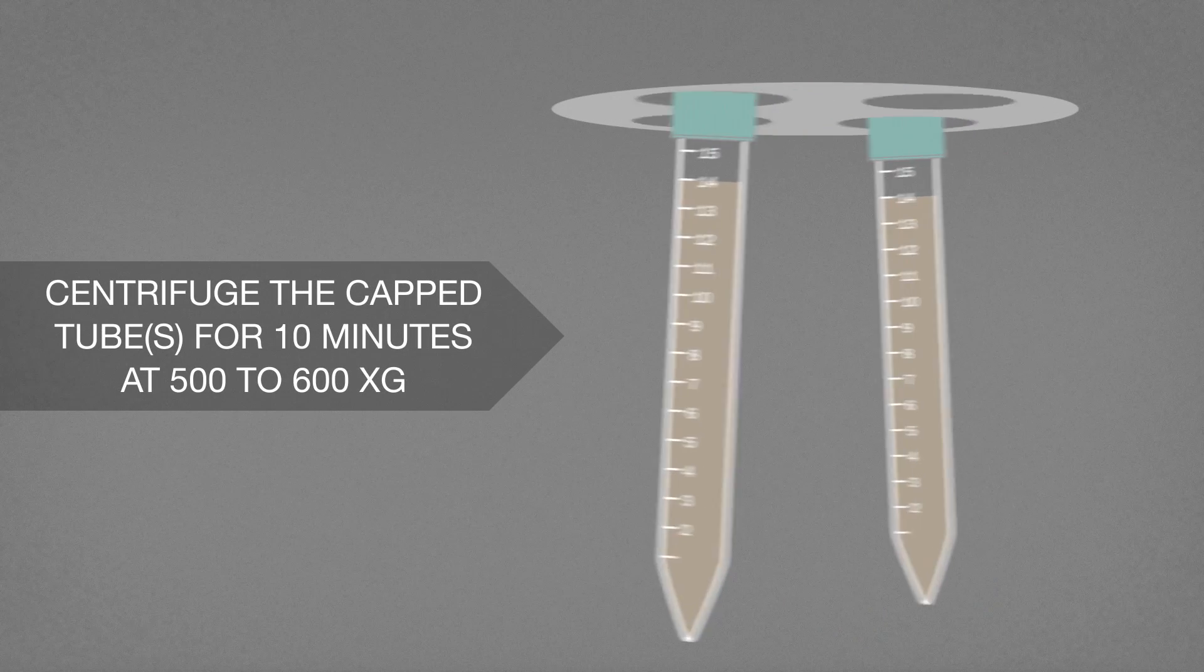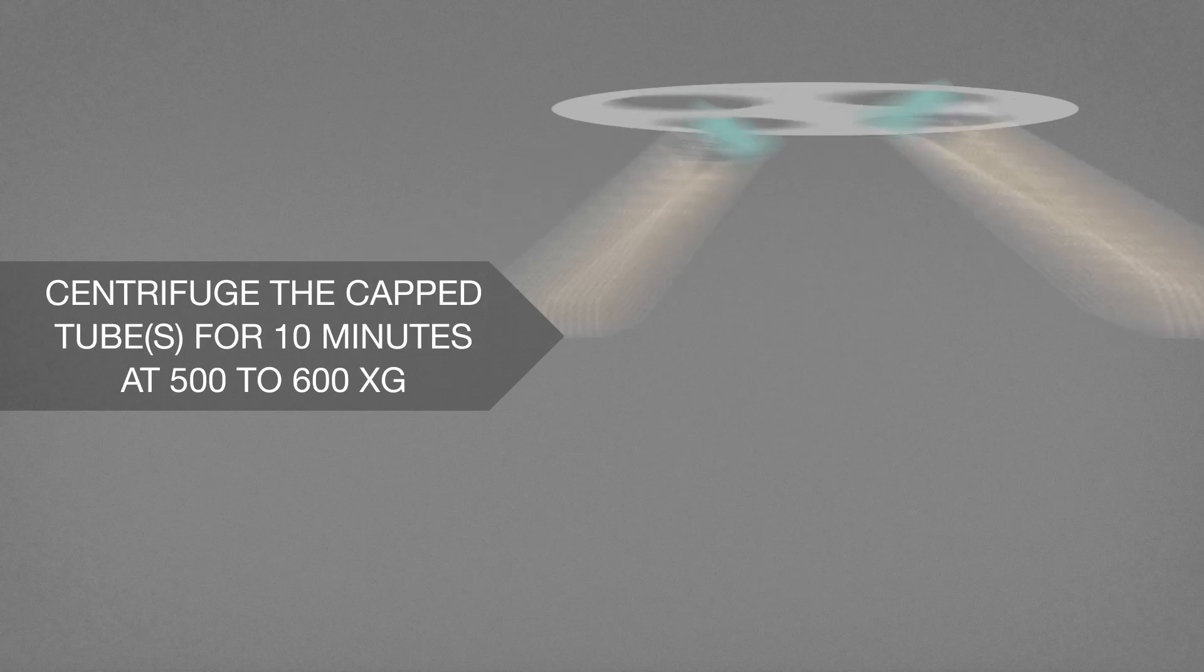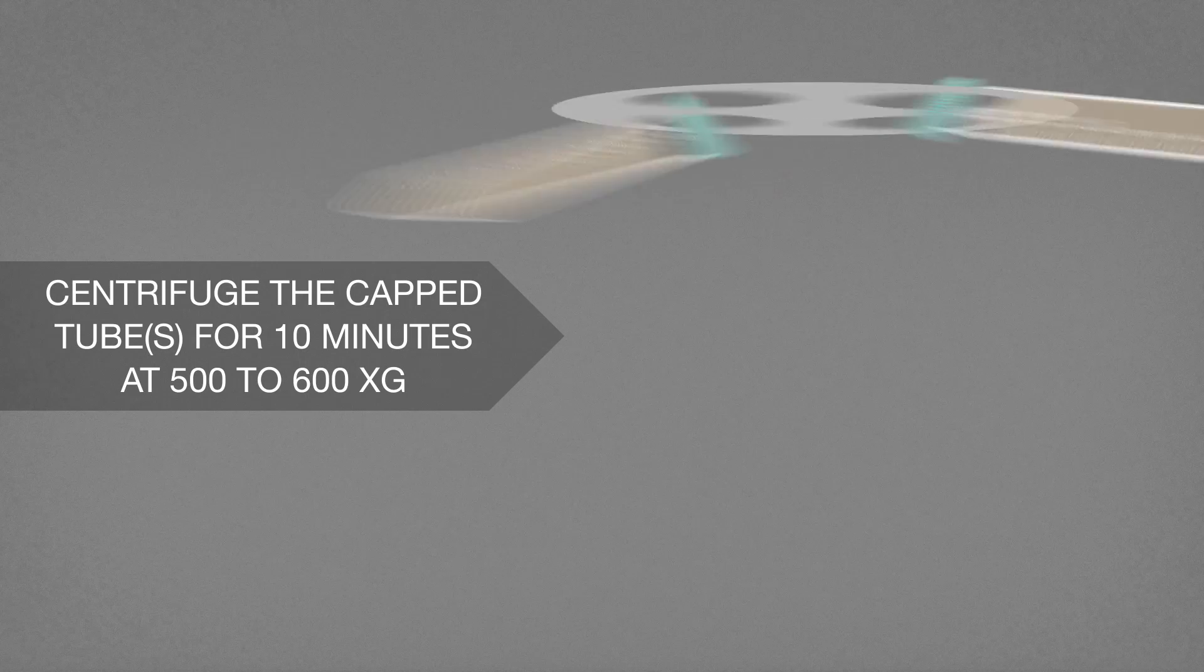Place the capped centrifuge tubes into the centrifuge with a free swinging head and centrifuge for 10 minutes at 500 to 600 XG.